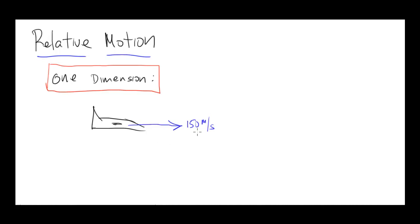Now, what do we mean when we say 150 meters per second — relative to what? You may have heard the phrase airspeed. Airspeed means it's moving 150 meters per second relative to the air surrounding the plane. So this is the velocity of the plane relative to the wind, relative to the air — this is how fast it's moving relative to the air around it. But it doesn't necessarily tell us what the wind is doing.